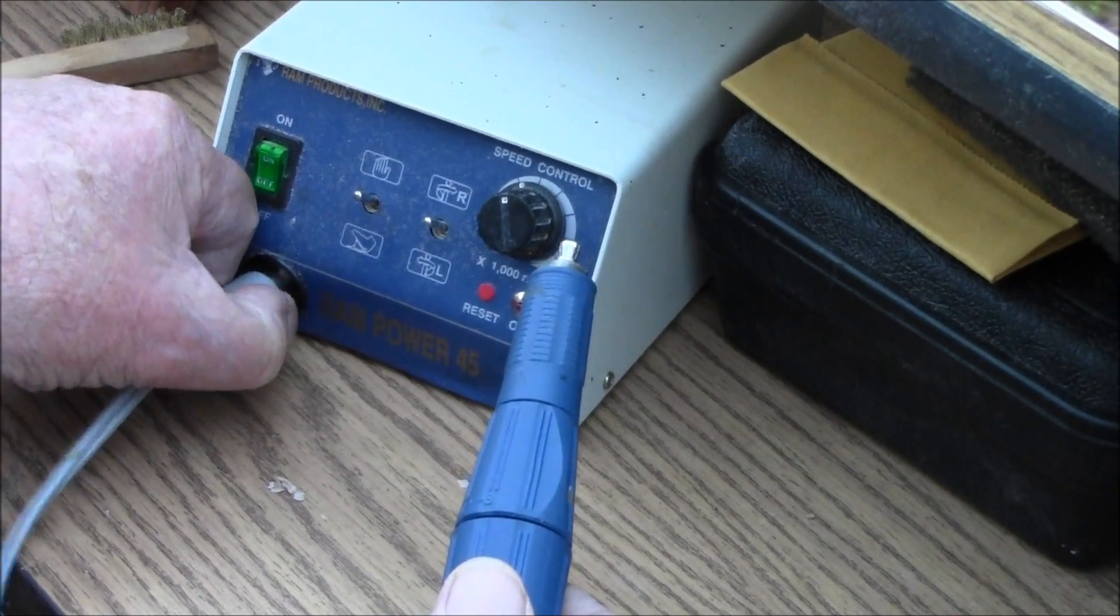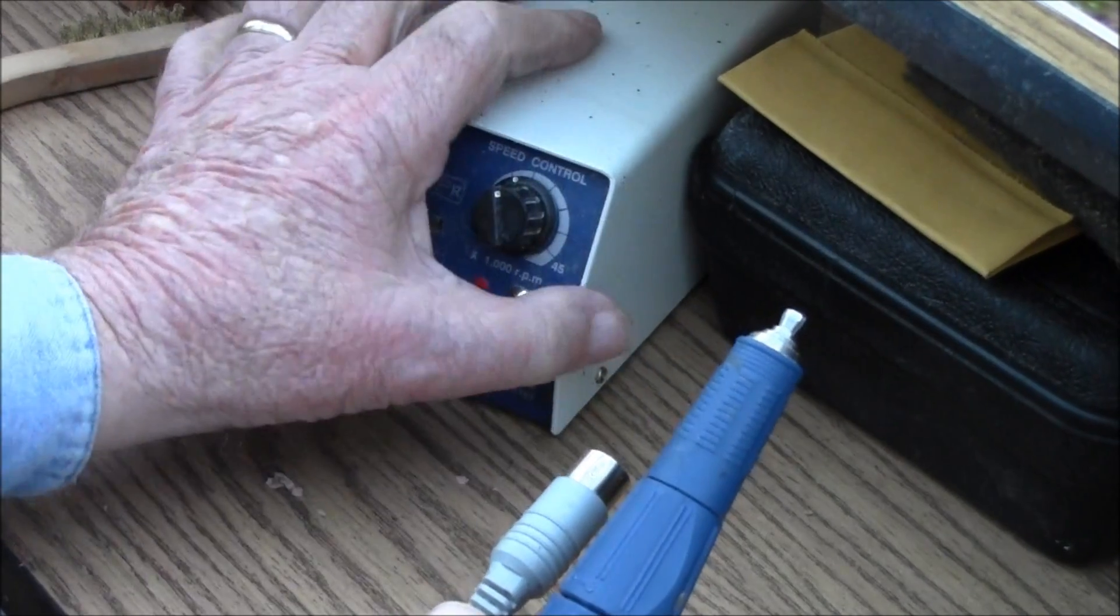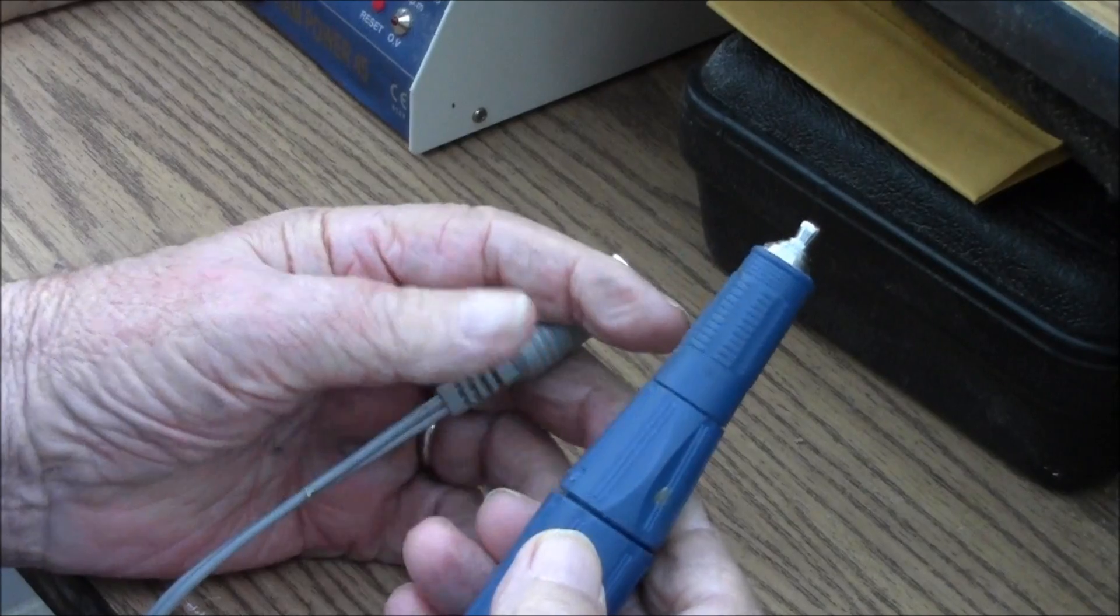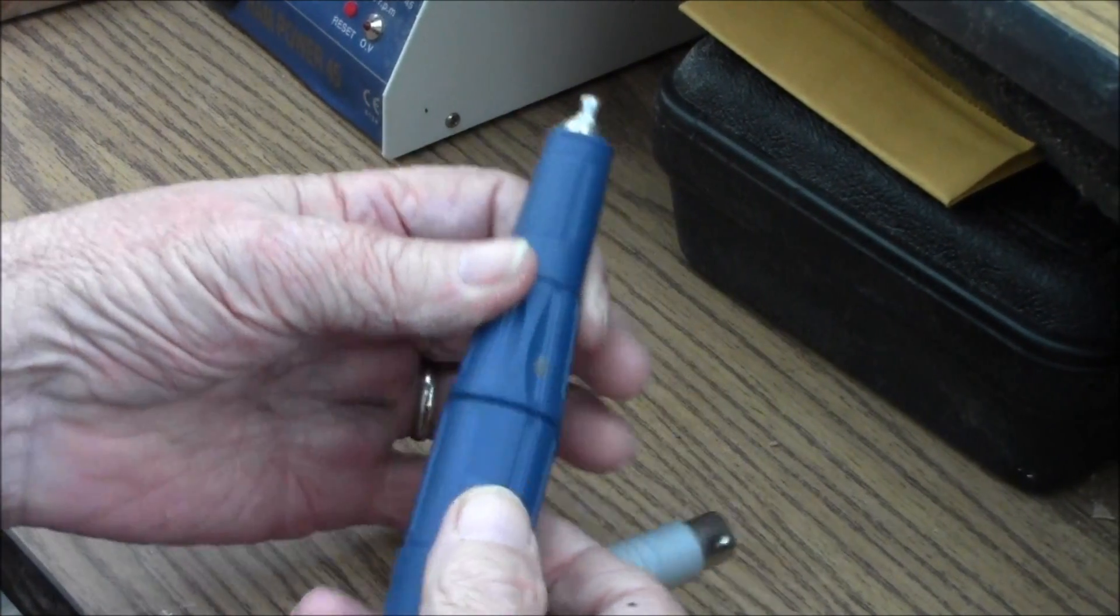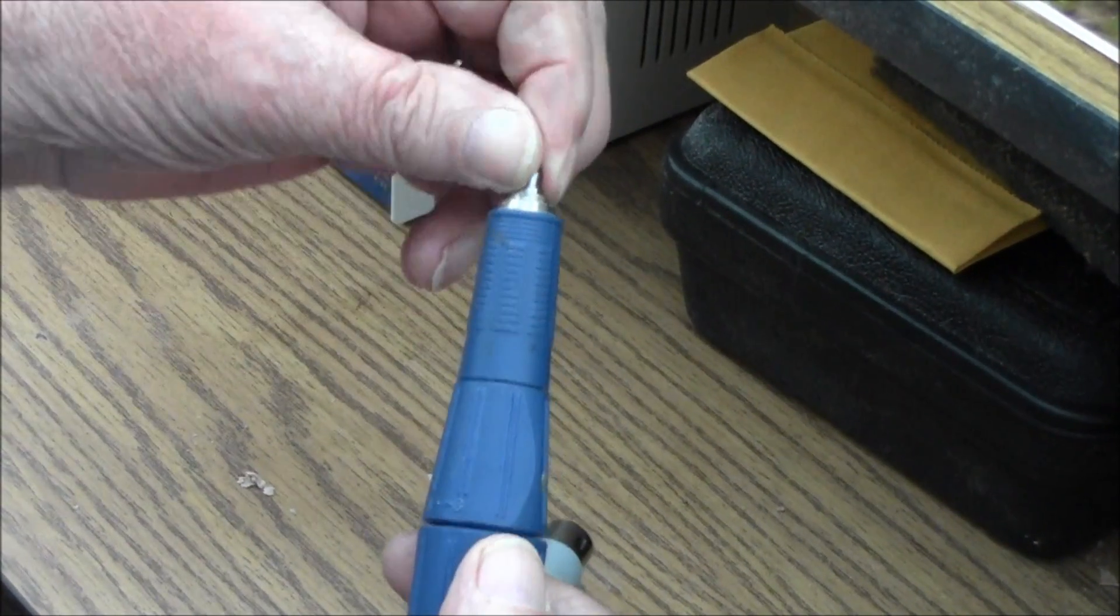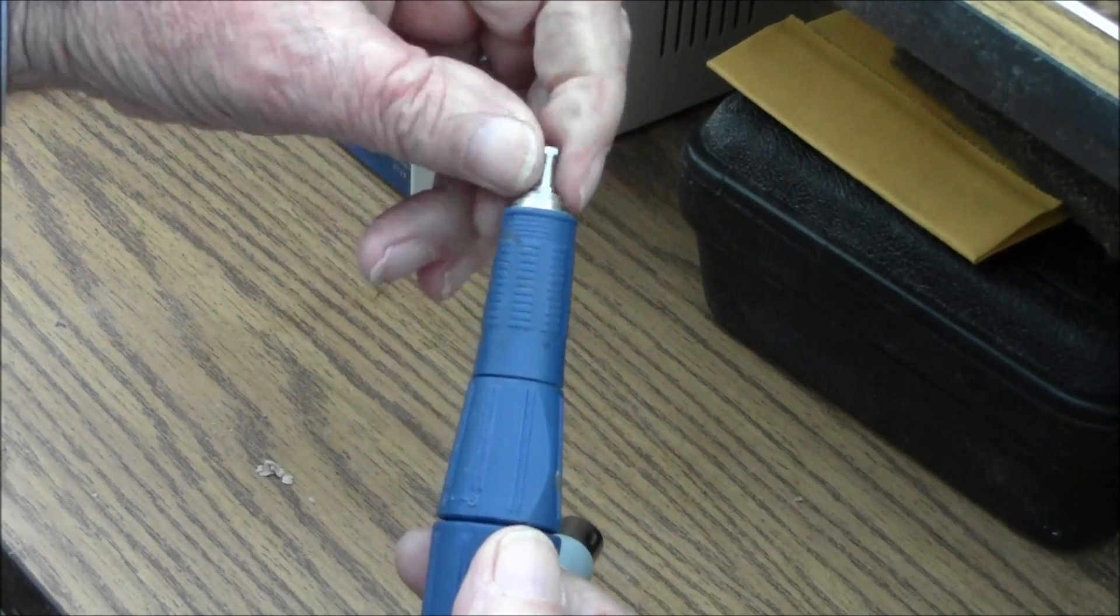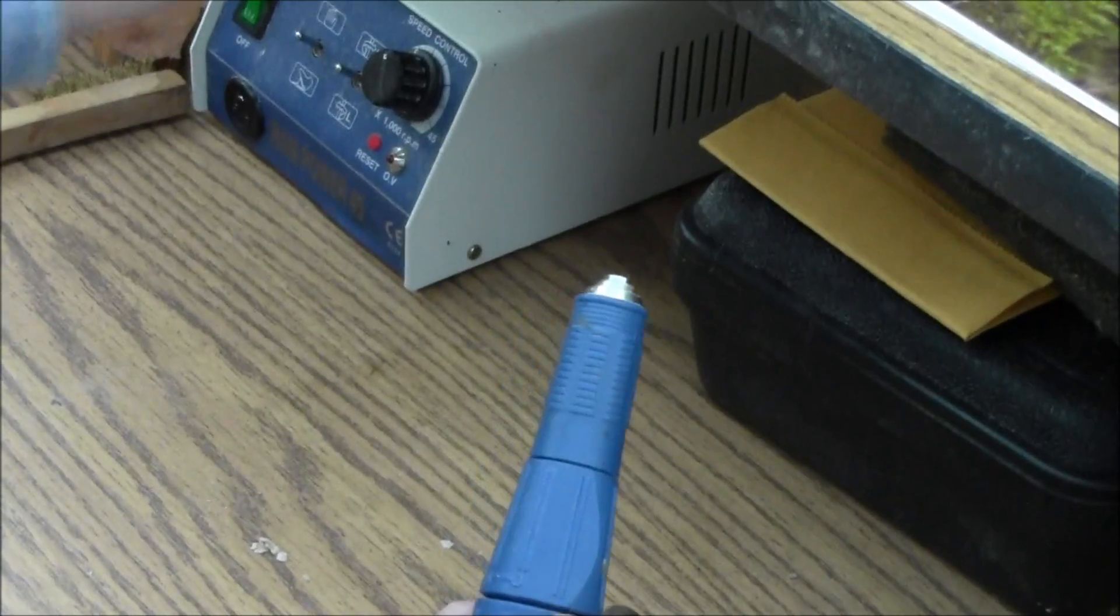First thing we're going to do is disconnect from our power box and push it aside. And you're probably already familiar with taking the collet out and changing collets. So we're going to take the collet out and lay it aside.